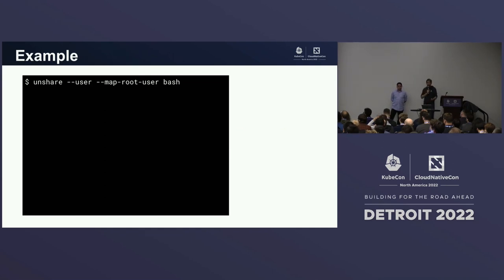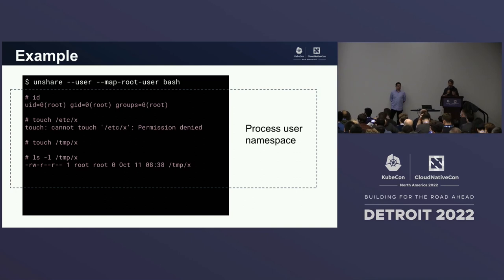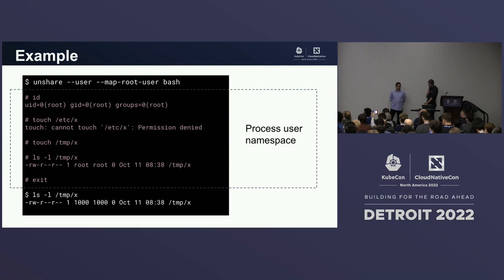A very quick example — easy to simulate on a Linux machine. This command will create a user namespace, and in there you can see root in the namespace. But we can't touch a file that requires being root on the host — that's why `touch /etc/x` fails, because we're root in this namespace but not on the host. If we touch a file we can modify, we see it belongs to root in the namespace. But if we exit the namespace, the file actually belongs to UID 1000. That's how the magic works.